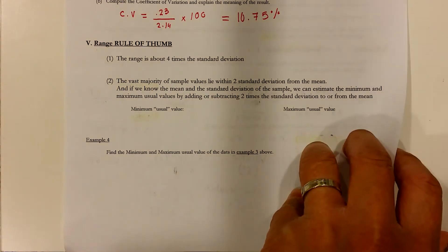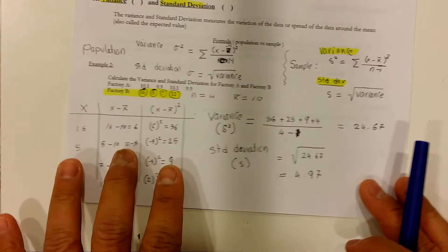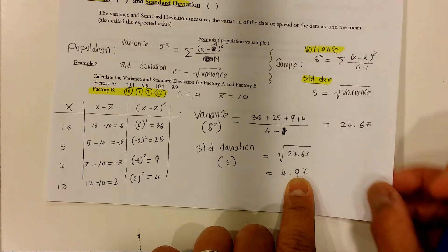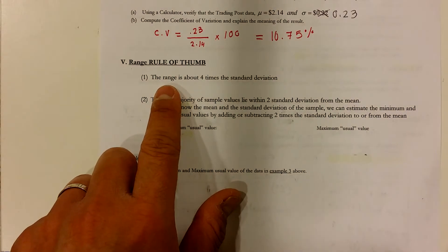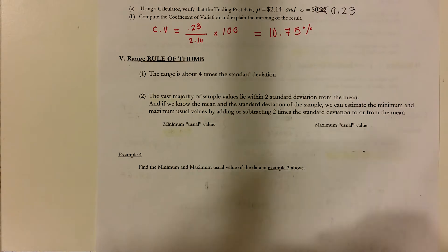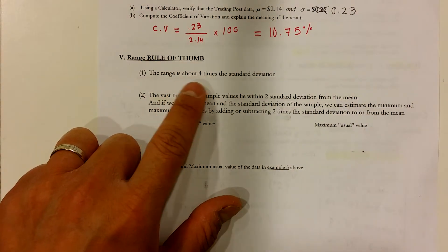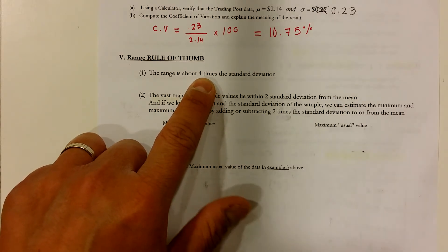you can actually approximate it. So instead of doing a lot of work to find the standard deviation, it says that you can actually approximate the standard deviation by first finding the value of the range and then divide it by 4. That's what it's saying.